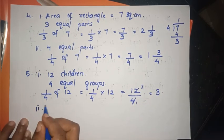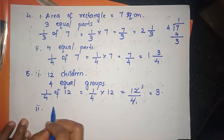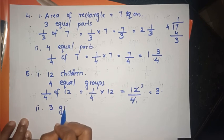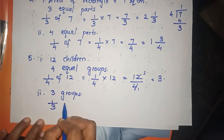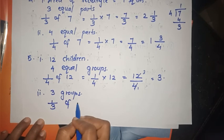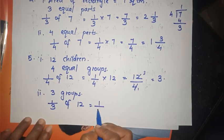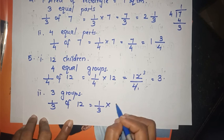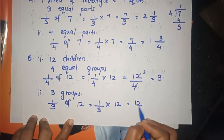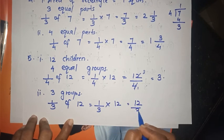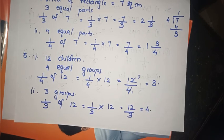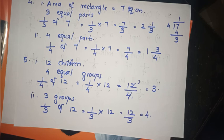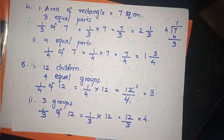Second part: if they were divided into 3 groups, we calculate 1/3 of 12, equal to 1/3 into 12, which gives 12/3, and 12 divided by 3 is 4. Now we have solved these questions and answers. See you in the next class, till then bye, thank you.